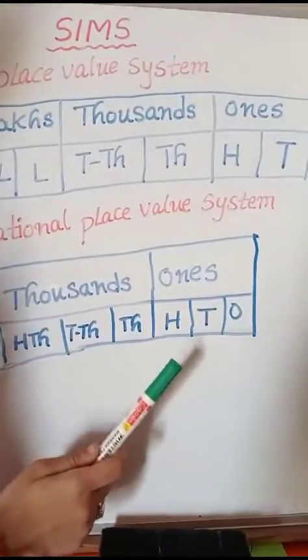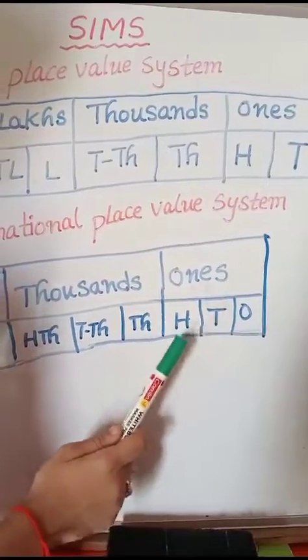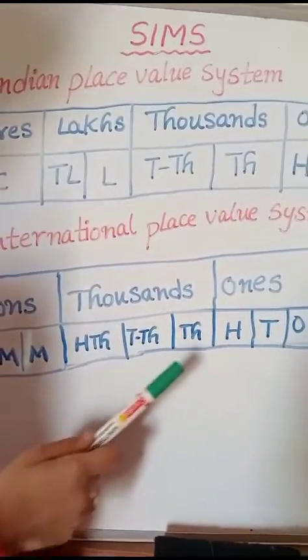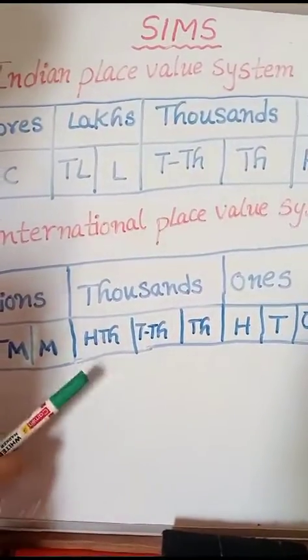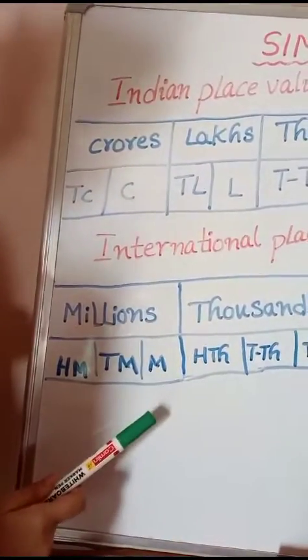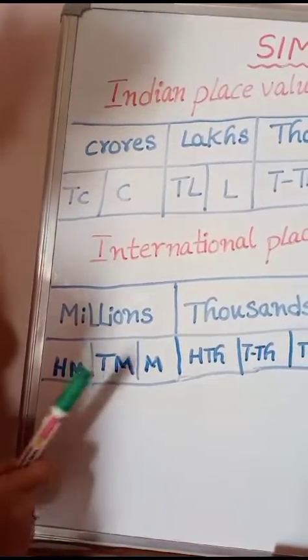The International Place Value System has 3 types: Ones, Thousands, and Millions. Ones have 3 places: Ones, Tens, and Hundreds. Thousands have 3 places: Thousand, Ten Thousand, and Hundred Thousand. Millions have 3 places: Million, Ten Million, and Hundred Million.